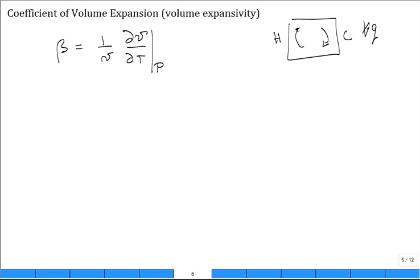And so the strength of the natural convection will be proportional to beta. It will be a property that's used in a Rayleigh number or Grashof number to characterize the strength of natural convection. So for this is the property, beta.